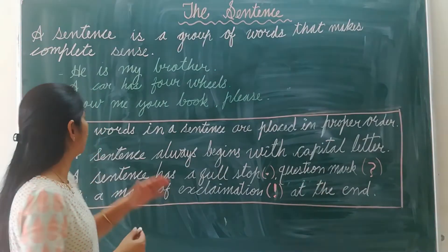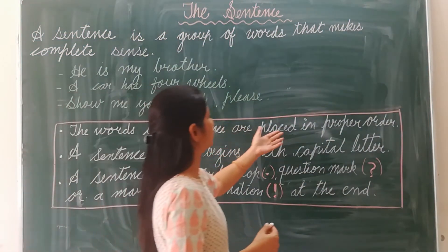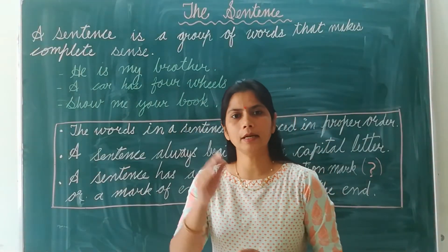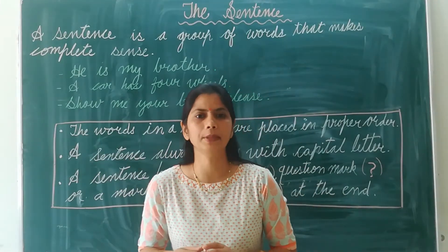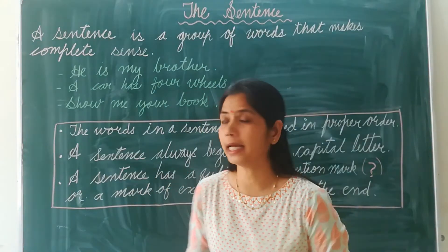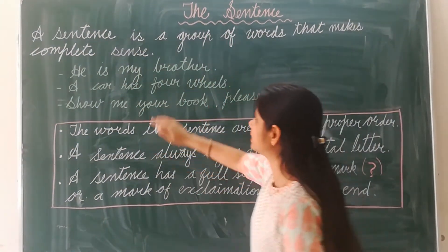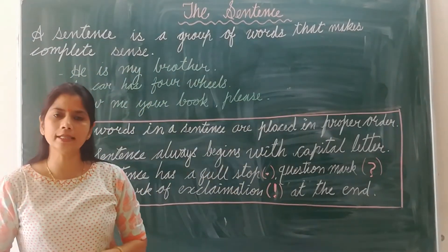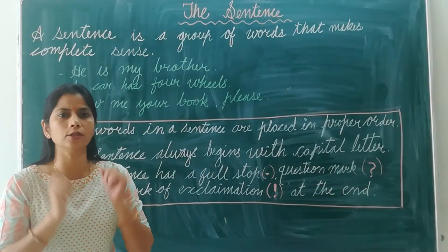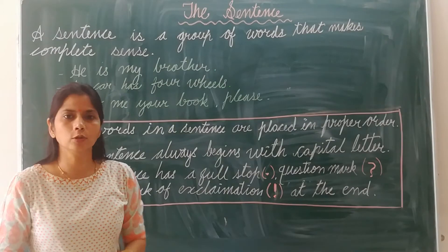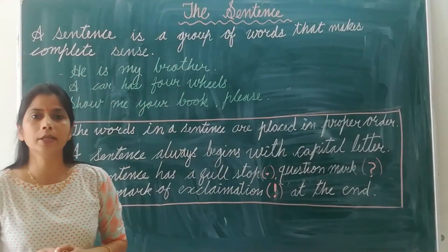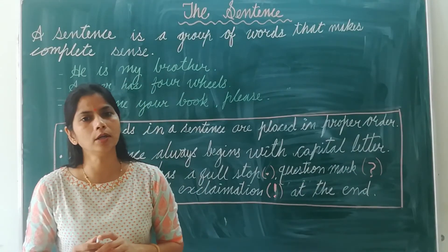The first one is: the words in a sentence are placed in a proper order. Whenever the words in a group are placed in a proper order, only then can they give a complete meaning. If the order of the words is not proper, it will not give a complete meaning. For example, if I say 'My is the brother' — using the same words but in a changed order — is it a sentence? No. Why? Because the order of the words is not proper.